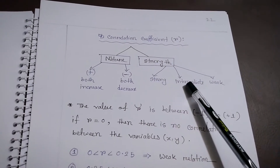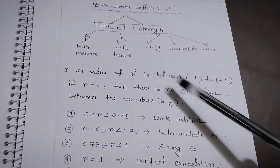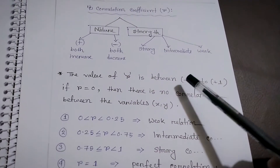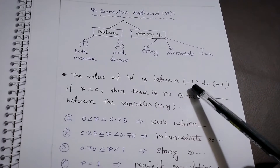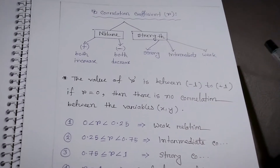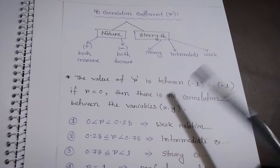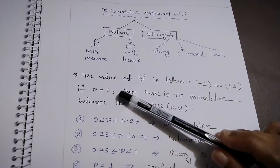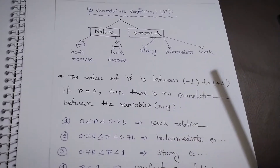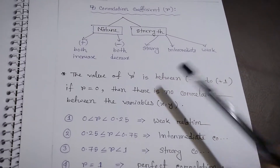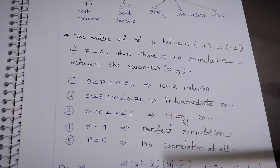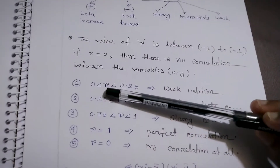Strength can be strong, intermediate, or weak. The value of r ranges from minus one to plus one. Minus one represents the lowest (strongest negative) relation and plus one represents the highest (strongest positive) relation. If r equals zero, it means there is no correlation or relation between the two variables x and y.